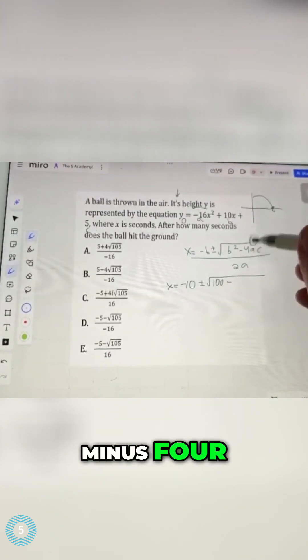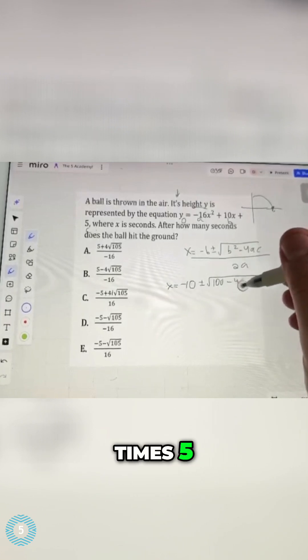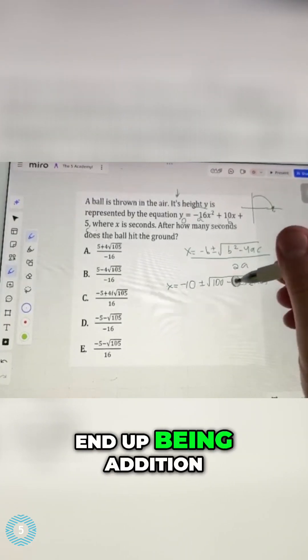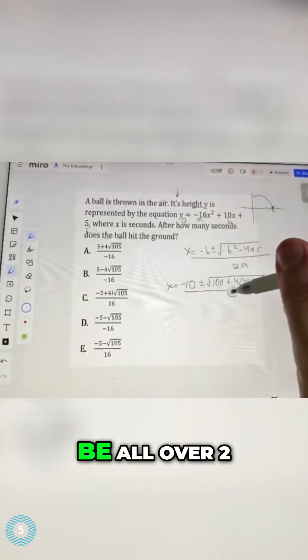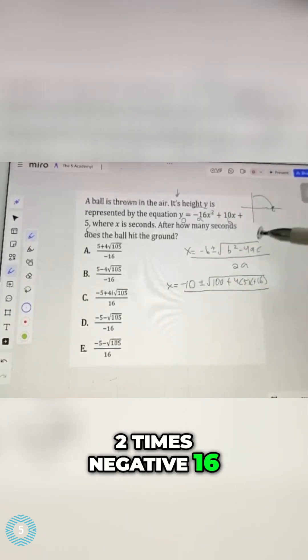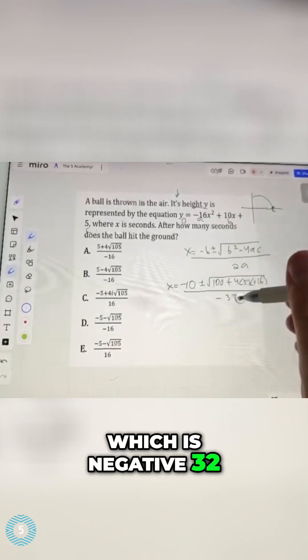minus 4 times 5 times negative 16. These are going to end up being addition. And that's going to be all over 2 times 5, or excuse me, 2 times negative 16, which is negative 32.